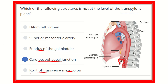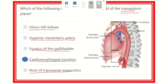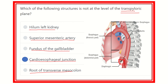The cardioesophageal junction is NOT located at the level of the transpyloric plane. It lies above the transpyloric plane. Therefore, the cardioesophageal junction is the correct answer — it is not located at the level of the transpyloric plane.